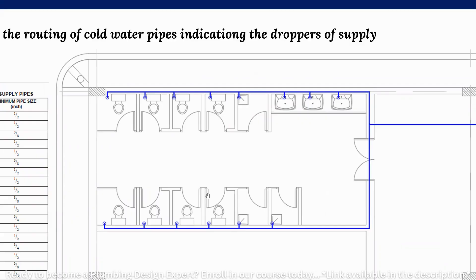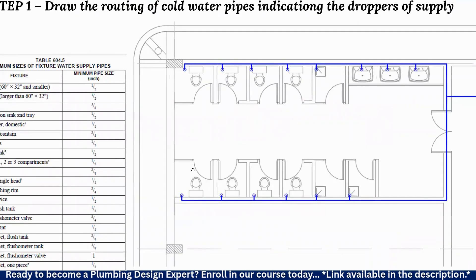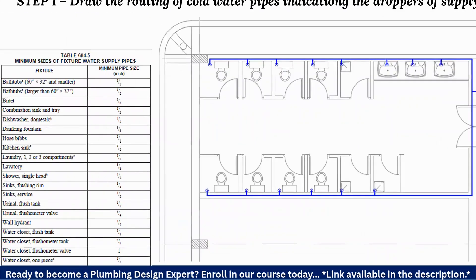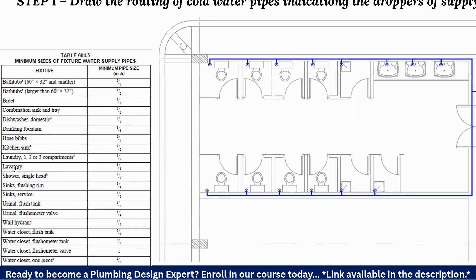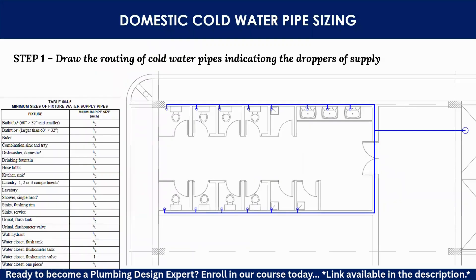Here you can see a table for the minimum pipe sizes. The droppers drawn for individual fixtures will have a standard pipe size, so we don't need to calculate them — we follow the standard. For example, for a lavatory the pipe size shown is 3/8 inch, so we follow that same pipe size for the dropper. This is Step 1.